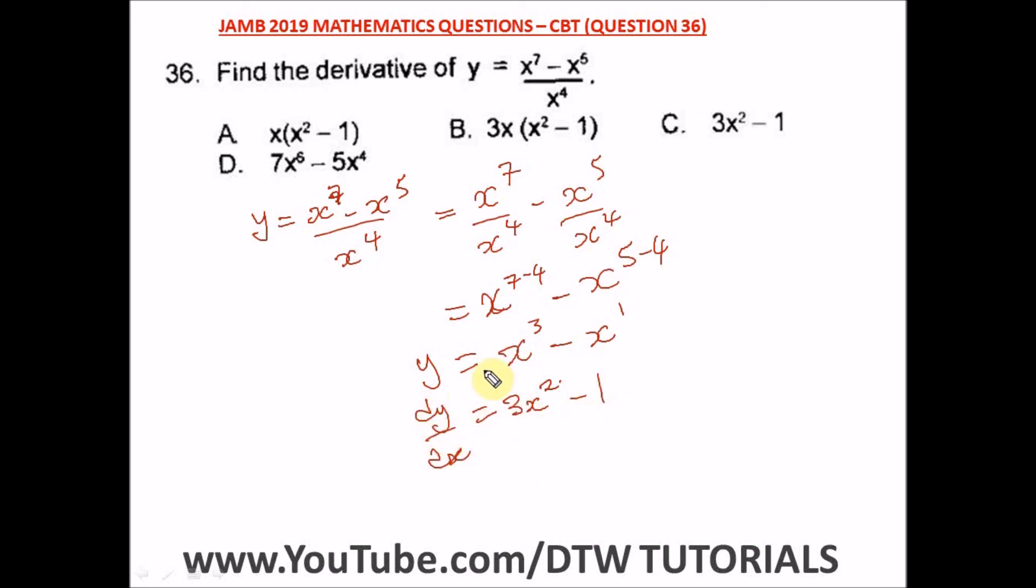So the derivative of y is 3x squared minus 1. So this is our answer and our right option here is option C.